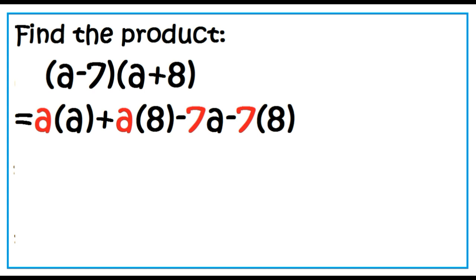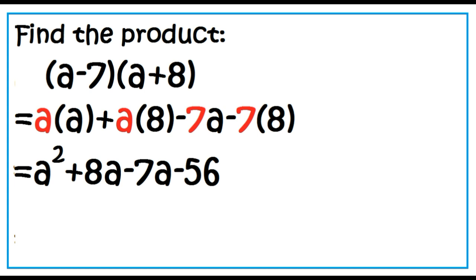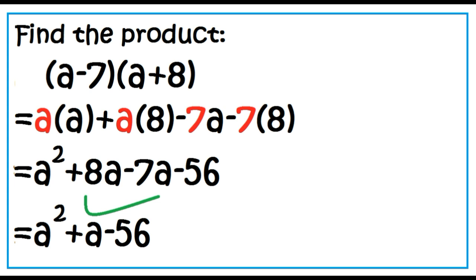The quantity A minus 7 times the quantity A plus 8 equals A squared plus 8A minus 7A minus 56. Since 8A minus 7A is 1A, the final answer is A squared plus A minus 56.